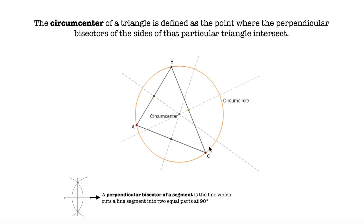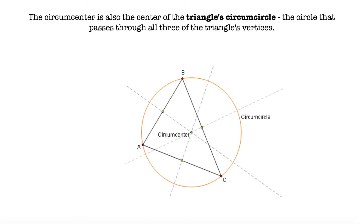As you can see in this image, we have the perpendicular bisectors of the three segments AB, AC, and BC, and those dotted lines all meet in one point — that is the circumcenter. The circumcenter is also the center of the triangle's circumcircle, which is a circle that passes through all three vertices of the triangle.